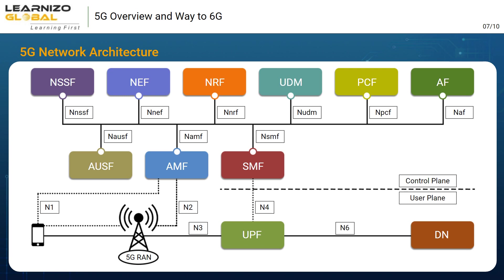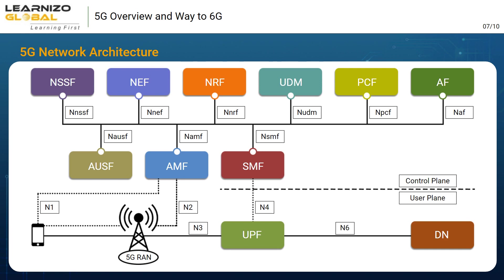There are some new network functions completely new to 5G: NRF, NSSF, and NEF. NRF is the Network Function Repository, which keeps information about all available network function instances. NSSF helps the AMF choose the right slices for the user. NEF allows external third-party applications to consume 5G network data and provide value-added services to 5G customers, creating new revenue generation opportunities for mobile network operators.